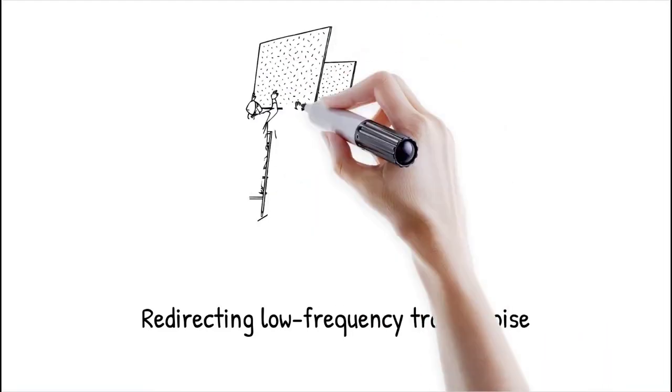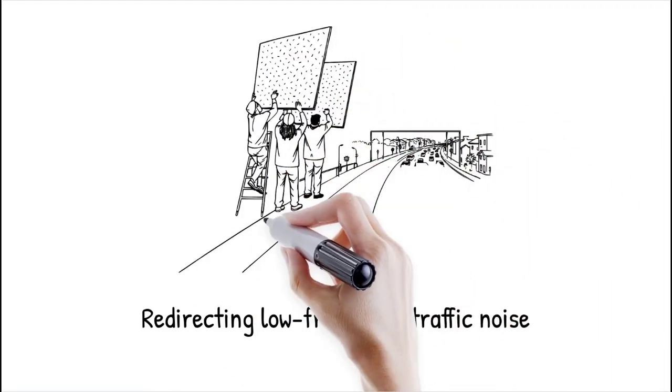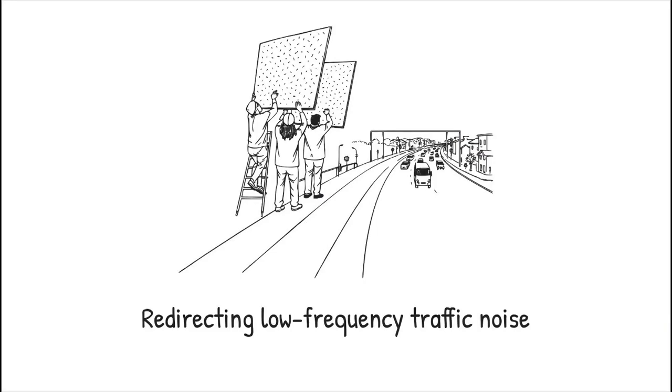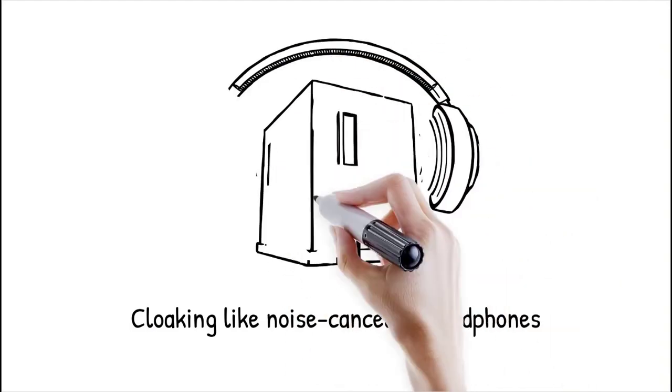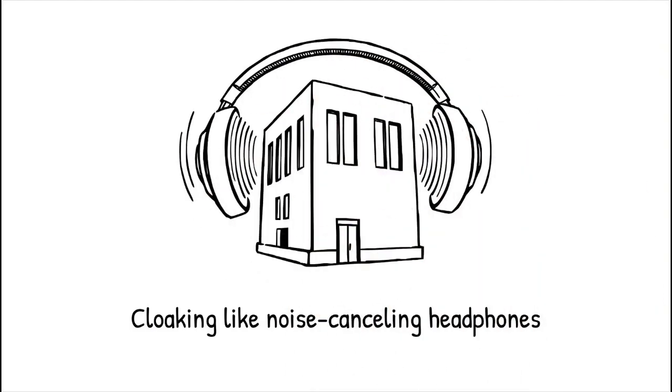A research team designed acoustic panels that can redirect low-frequency noise from traffic, reducing its impact in surrounding urban areas. Acoustic cloaking in cities is like noise-canceling headphones for buildings, shielding structures from unwanted sound without altering their appearance.